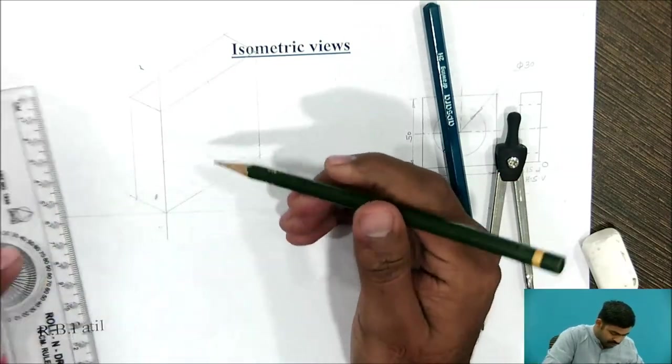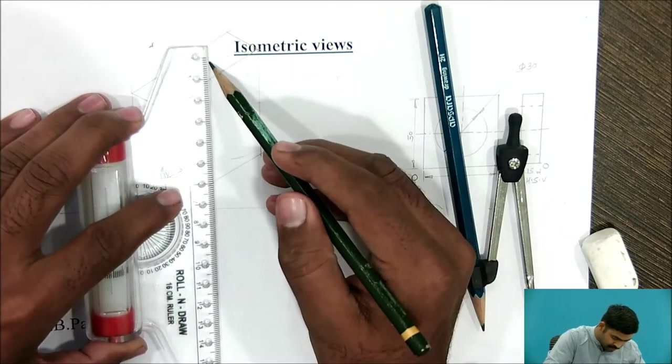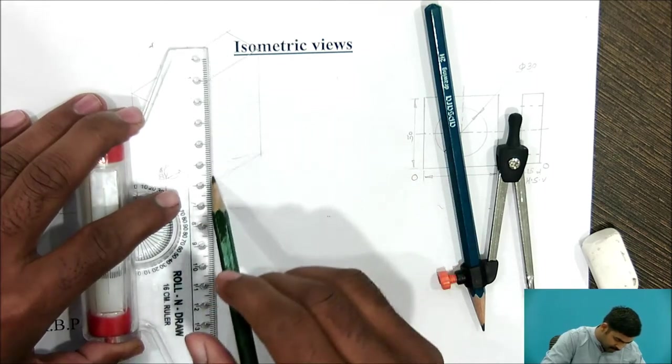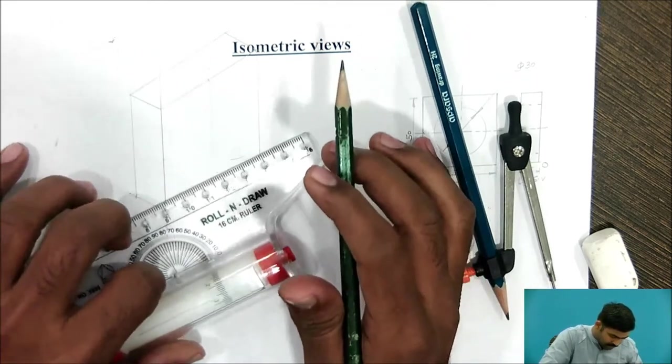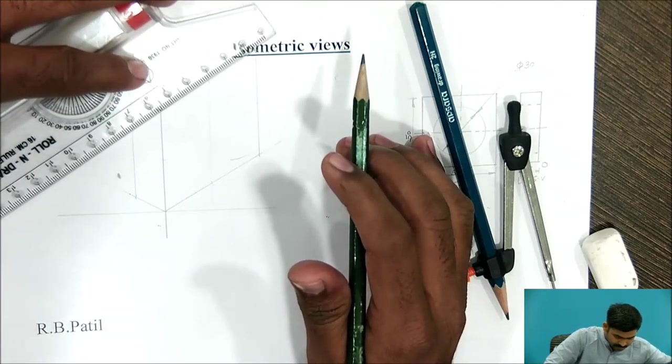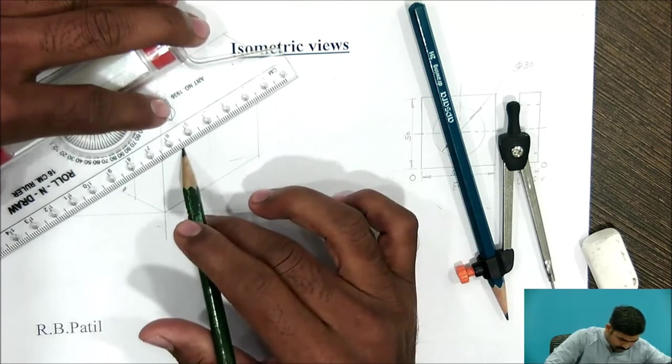Now, join this, try to use the faint lines, again second axis which is parallel to this corner.